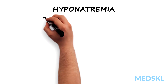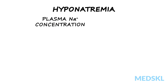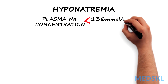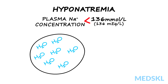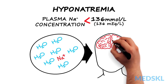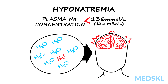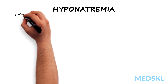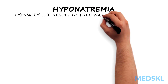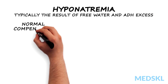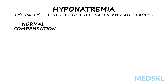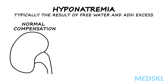Hyponatremia is defined as having a plasma sodium concentration less than 136 millimoles per liter. In other words, there is too much water relative to sodium. This can result in serious consequences, as it may cause dangerous brain swelling. Typically, hyponatremia is the result of free water and ADH excess. The normal compensation to a low plasma sodium level and to low plasma osmolality should be the excretion of dilute urine.